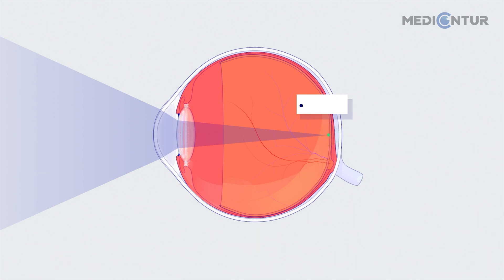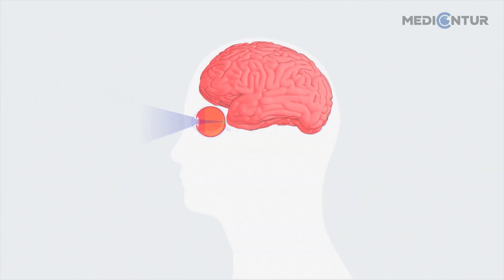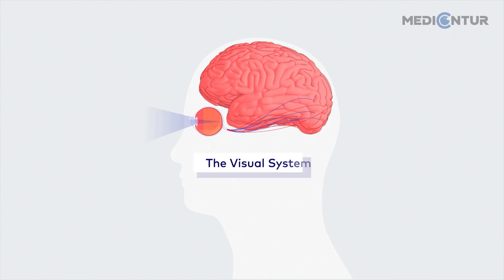From here, information is channeled and processed by the brain to create the picture we perceive. These physiological components constitute our visual system.